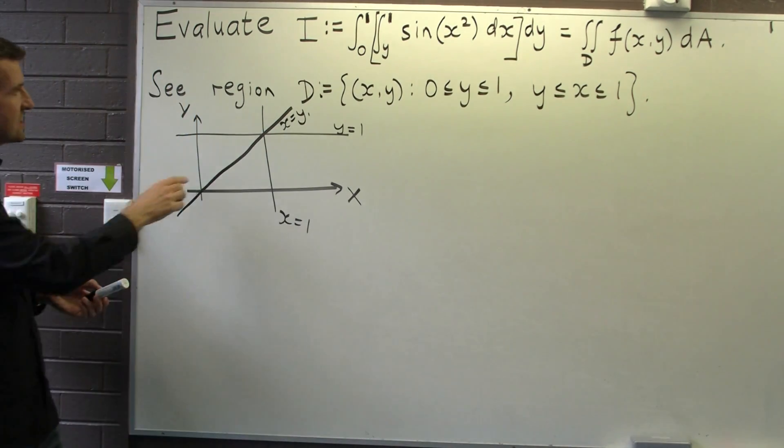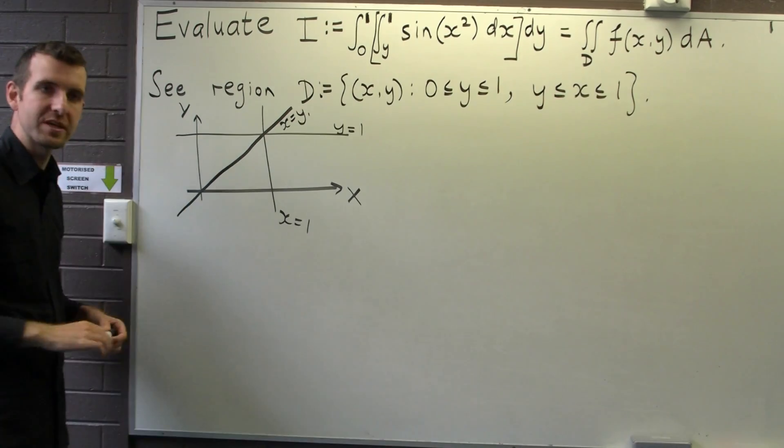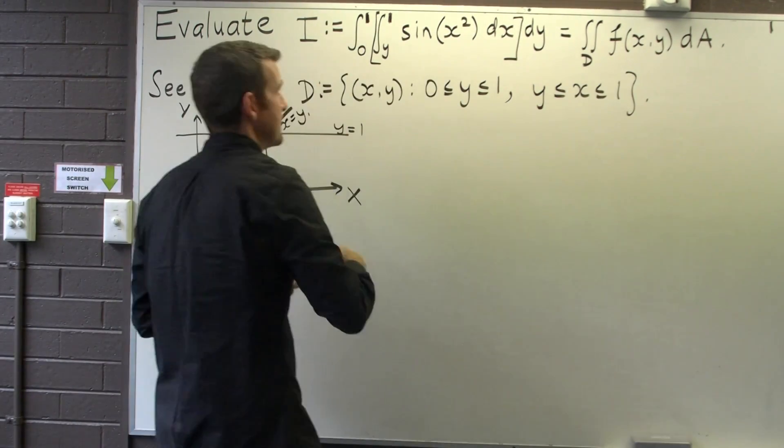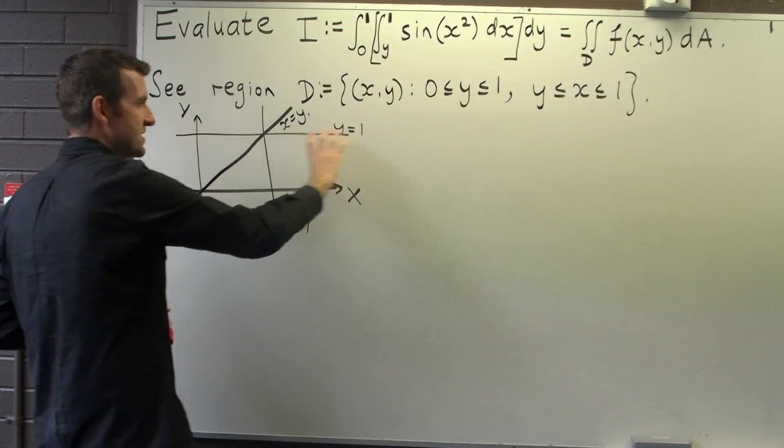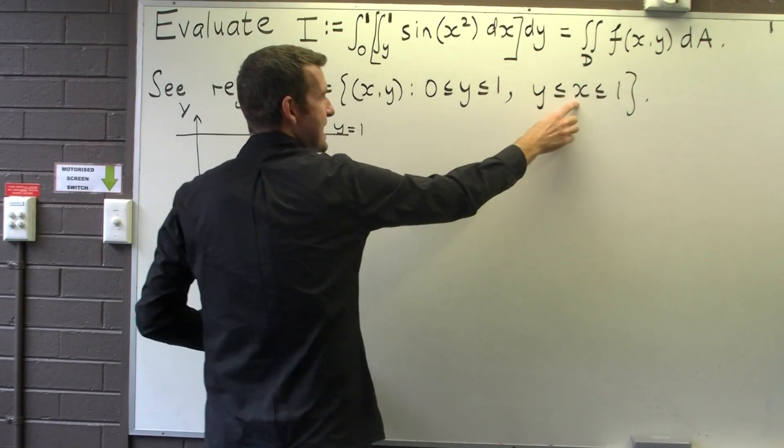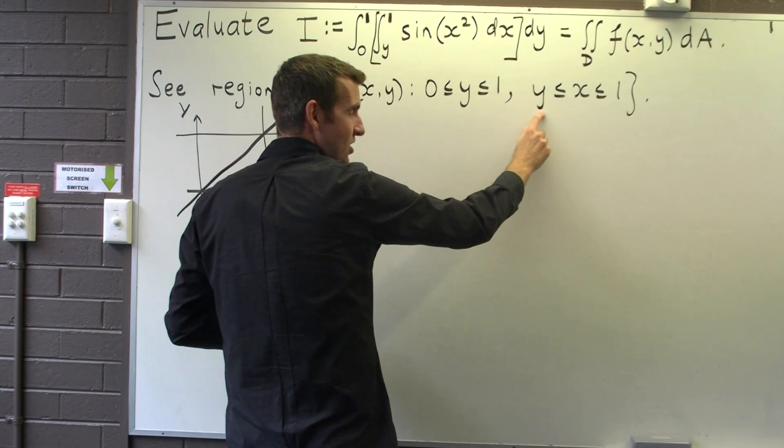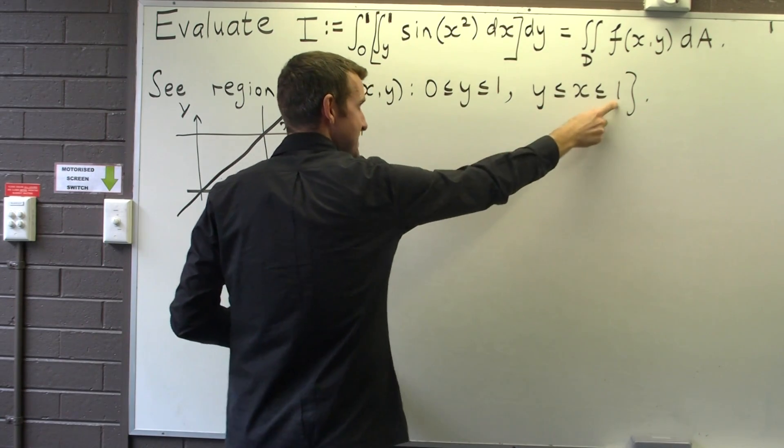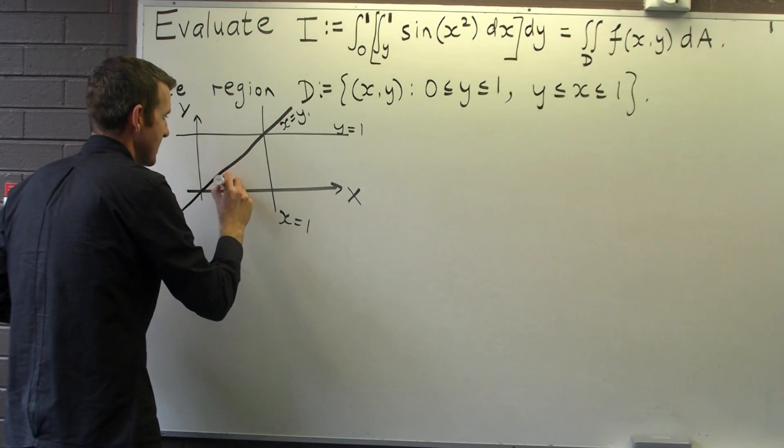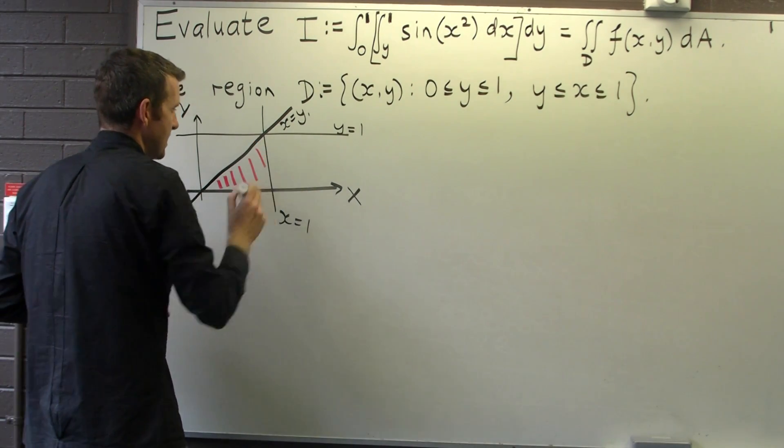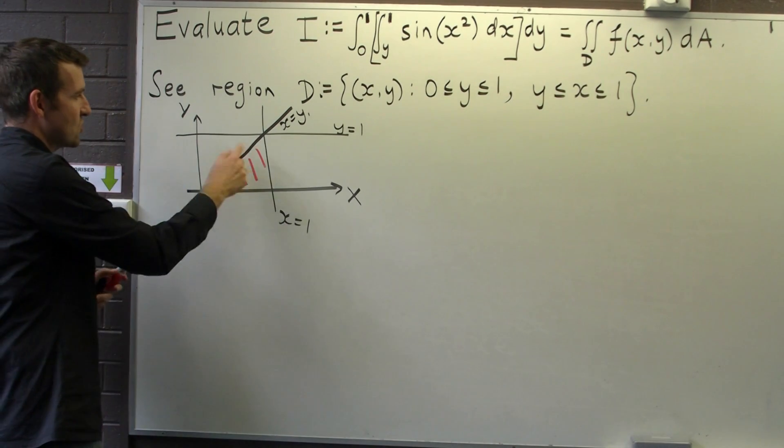Okay, so our region lies somewhere in between all these curves. So which one is it? Well, y is between 0 and 1 so it's going to lie somewhere in this infinite strip. And x is to the right of y but to the left of 1. So the region is just this triangle here.